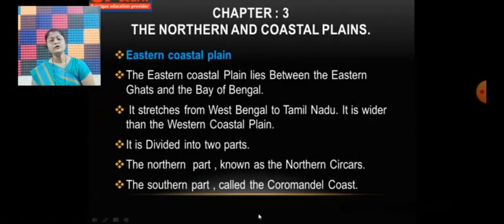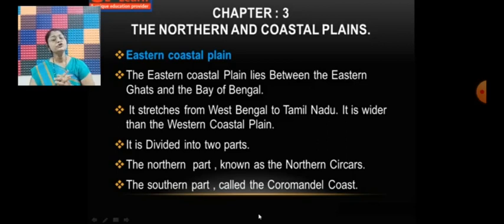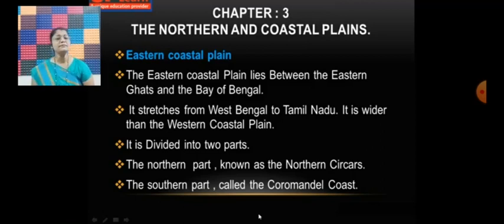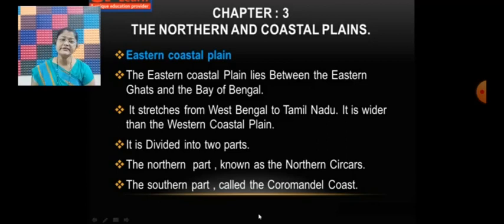Now let us talk about the eastern coastal plain. The eastern coastal plain lies between the Eastern Ghats and the Bay of Bengal. It is stretched from West Bengal to Tamil Nadu. It is wider than the western coastal plain.